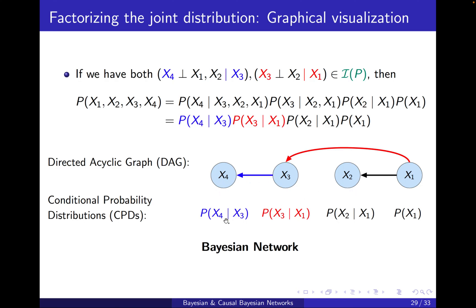I will have this blue link for x4, the red link for x3, and then x2 and x1 are the same as before. If I put on the corresponding CPDs next to each node, then I will end up again with a Bayesian net.